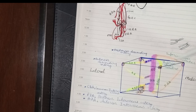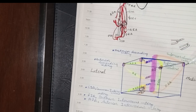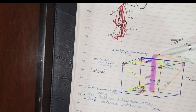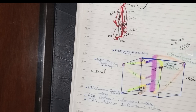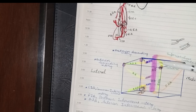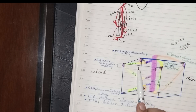The superior ulnar collateral will supply the posterior side of the medial aspect, and the inferior ulnar collateral will supply the anterior side. So we have two branches from the medial aspect of the brachial artery. After this, we move to the lateral aspect.